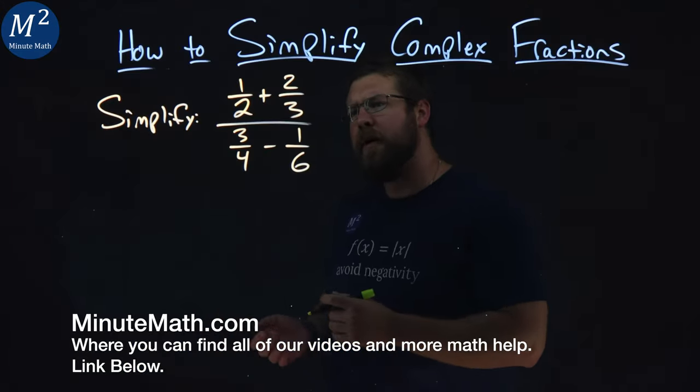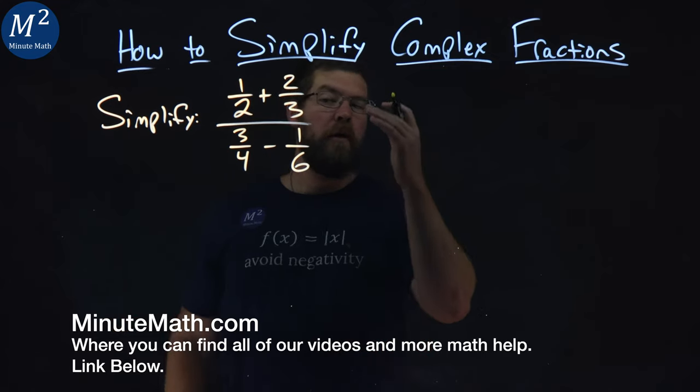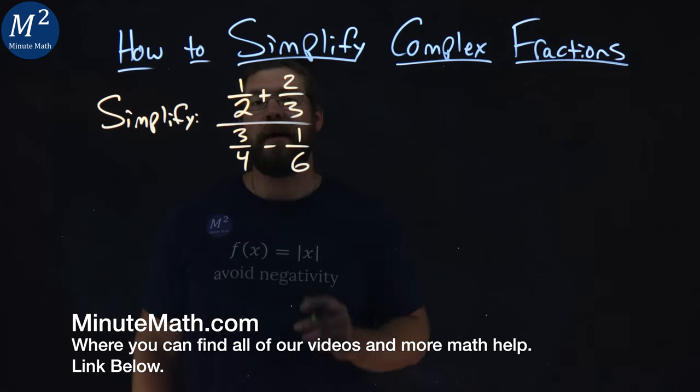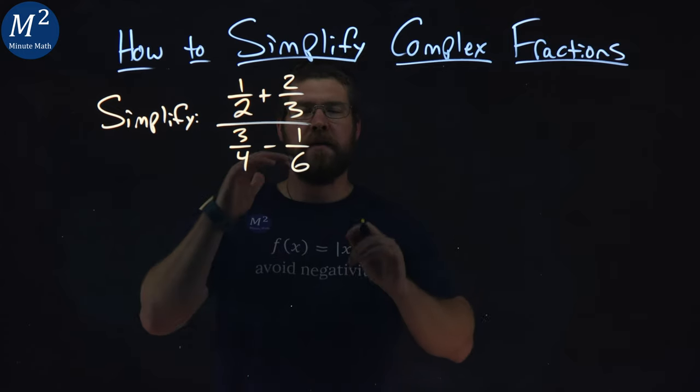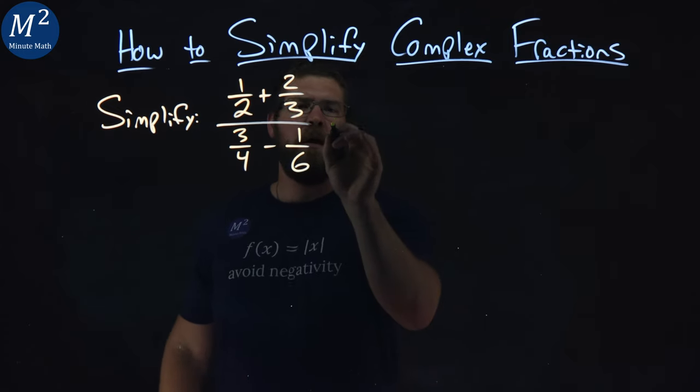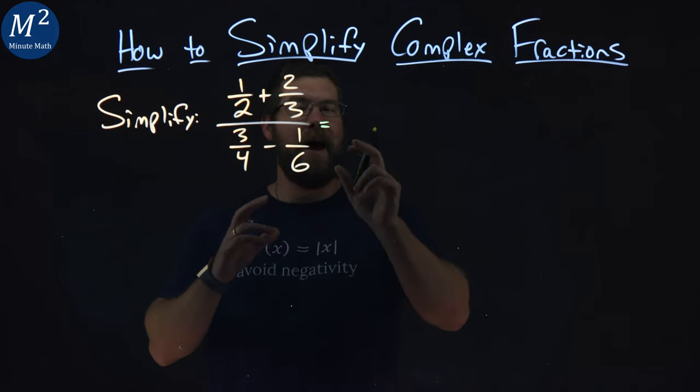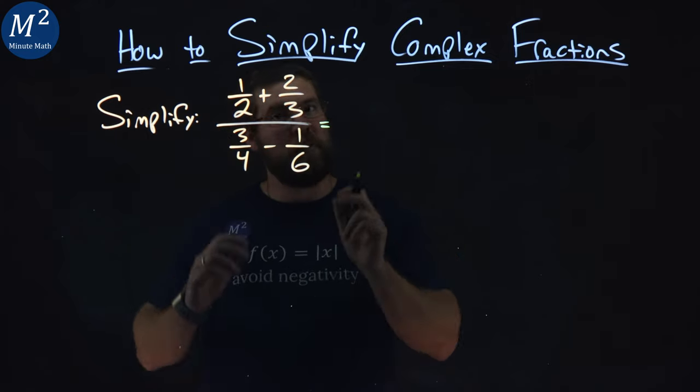We're given this problem right here. Simplify 1 half plus 2 thirds over 3 fourths minus 1 sixth. First we have to simplify the numerator and denominator individually. For both of these, we need to find a common denominator of the fractions on each one.